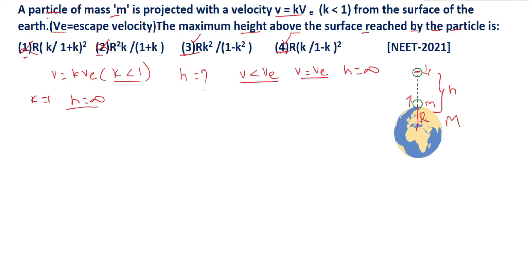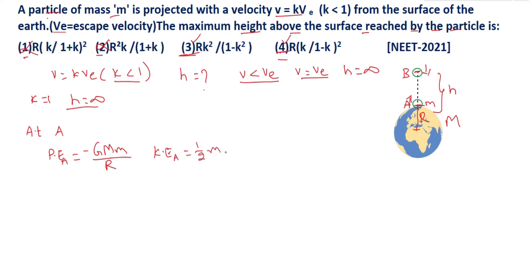Now you have to choose the correct answer between 3 and 4. Let me take the point of projection as point A and the point it reaches as point B. At A, it will have both potential energy and kinetic energy. The formula for potential energy at A is PA equal to minus G capital M small m by capital R, where capital R is the distance from the center. At A, it has kinetic energy also: KE at A is equal to half m V squared, where V is the velocity of projection, that is kVe squared.